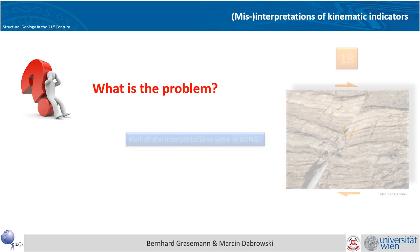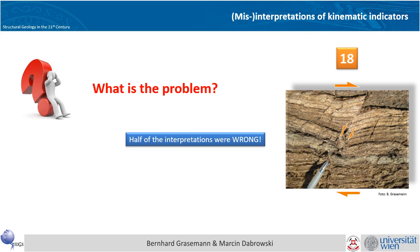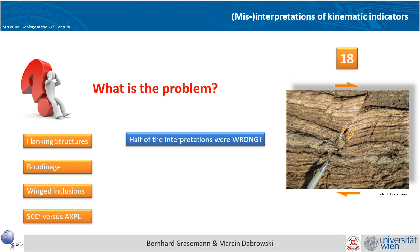So what is the problem here? The problem is that half of the interpretations that I gave you were the wrong interpretation. We know from other shear sense criteria and from the regional geology that the shear sense of 9 of these 18 examples was wrong, and mostly these wrong examples are from the families of flanking structures, boudinage, winged inclusions, and confusion about SCC' fabric versus actual axial plane cleavage. In the following we'll have a closer look at these four different structures.